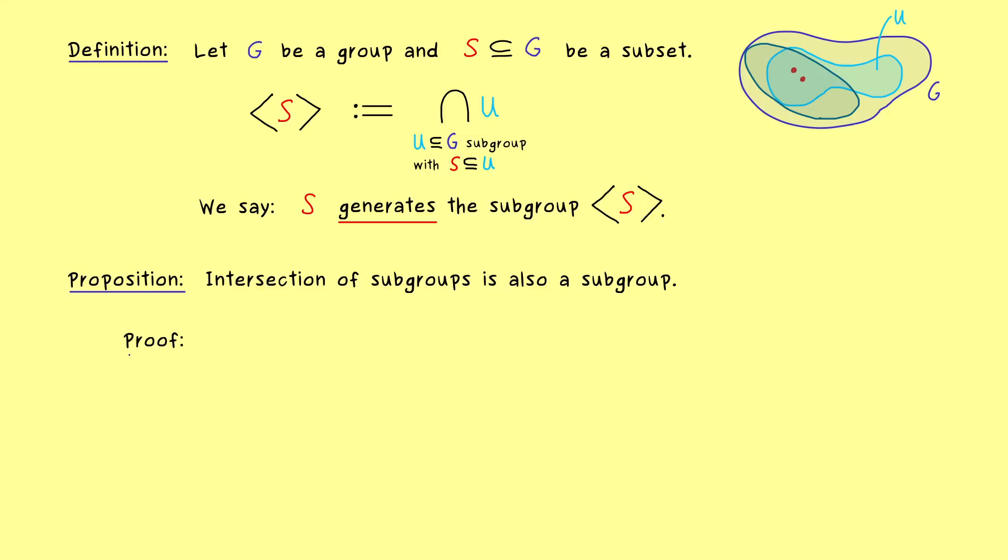And in fact the proof is surprisingly easy. And in order to write it down let's first fix the assumptions. So we have a group G and any collection of subgroups called U_J. This means here we have an index set capital J and it does not matter what this actually is. So in particular it can be an infinite index set.